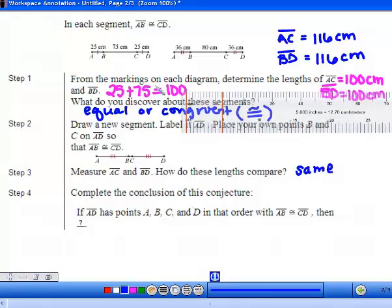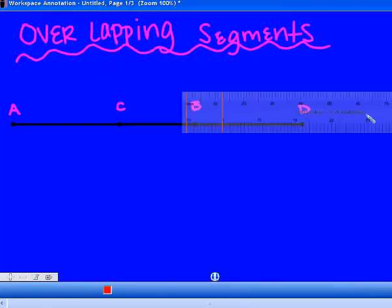Using this information, we're going to complete this statement: If AD has points A, B, C, and D in that order with AB congruent to CD, then what does that mean? We've seen in both examples and the one we measured that if AB is congruent to CD, then AC is congruent to BD as well.